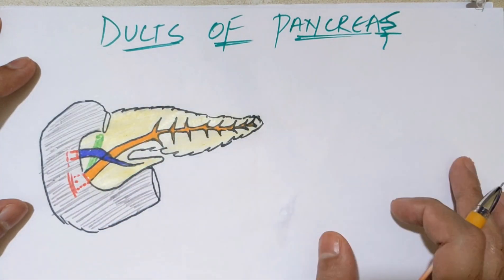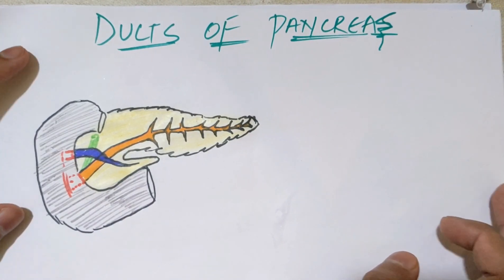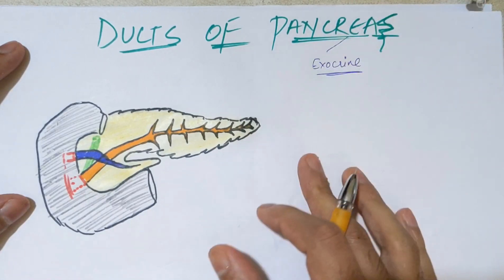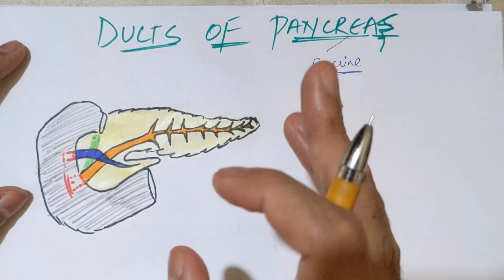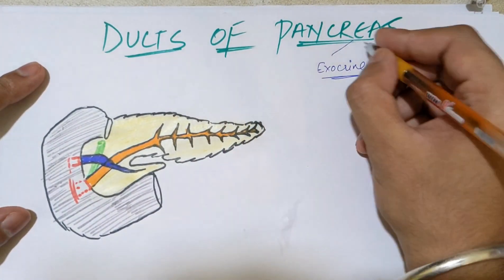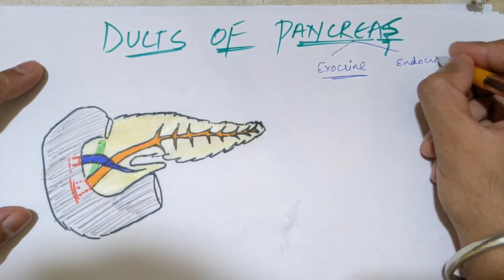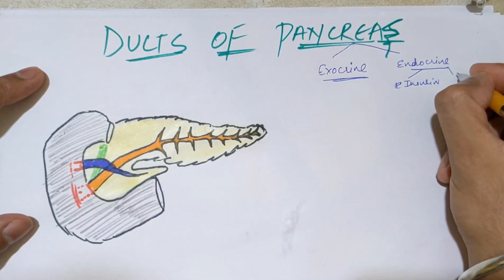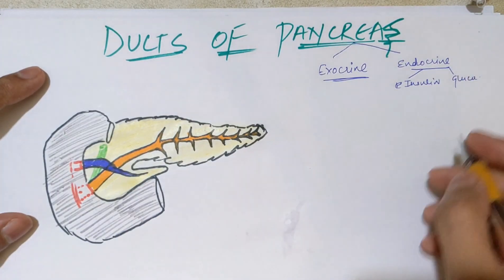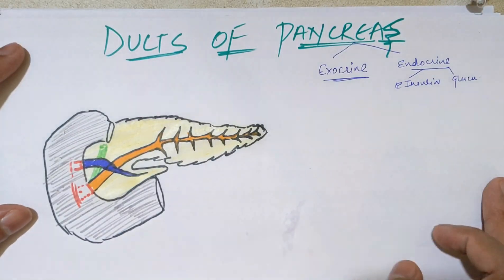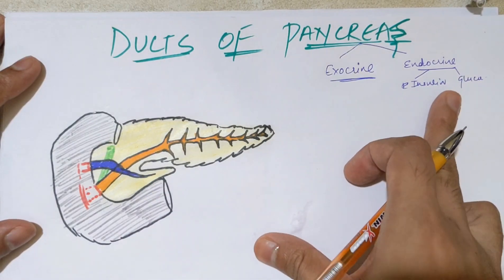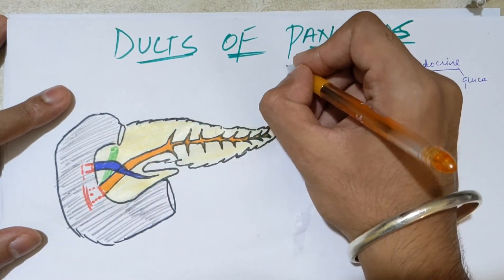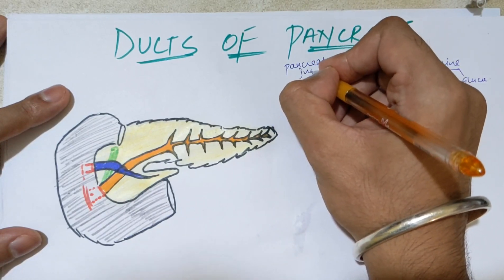The pancreas has two types of secretions: endocrine and exocrine. The ducts relate to exocrine secretion, through which pancreatic juice is secreted and released into the duodenum for digestion of carbohydrates, fats, and proteins by different enzymes. The endocrine portion releases hormones — insulin and glucagon — from the islets of Langerhans cells inside the pancreas, which control blood sugar levels.